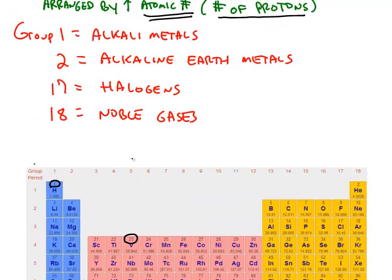The periodic table has groups, which are vertical columns, and it has periods, which are horizontal rows. Four of the groups are given special names: group 1, group 2, group 17, and group 18. So the first two groups and the last two groups. One and two are the alkali metals and alkaline earth metals.